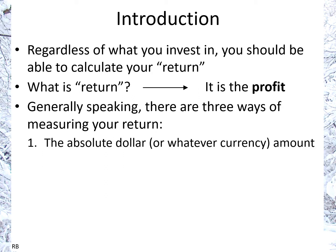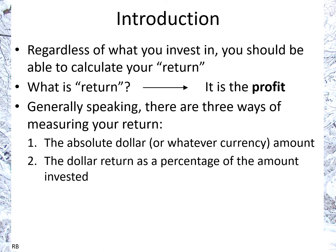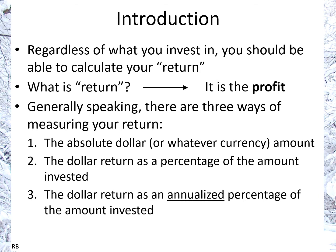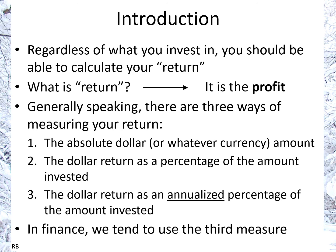First of all, the absolute dollar — or whatever currency — amount is called the absolute return. Secondly, that dollar return as a percentage of the initial amount invested. And thirdly, an annualized percentage of that amount invested. In finance, we tend to use the third measure, but we also use the first and second, so you need to be clear about which is being used, particularly the difference between number two and number three.